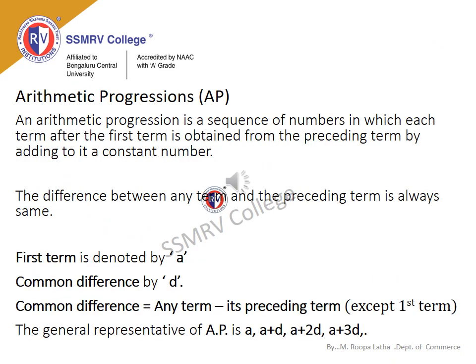Arithmetic Progression: An arithmetic progression is a sequence of numbers in which each term after the first is obtained from the preceding term by adding a constant number. The difference between any term and the preceding term is always the same — that is, the difference between the 1st and 2nd term, 2nd and 3rd term, and 3rd and 4th term will all be equal. The first term is denoted by 'a' and the common difference by 'd'. The common difference equals any term minus its preceding term (except the first term). The general form of an AP is: a, a+d, a+2d, a+3d, and so on.